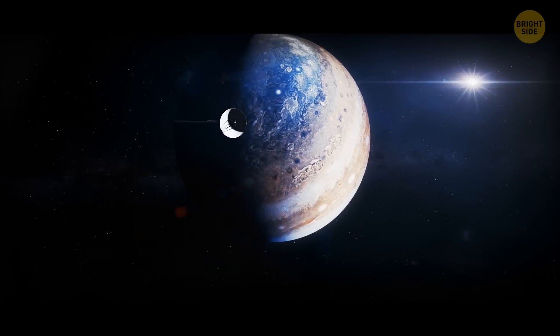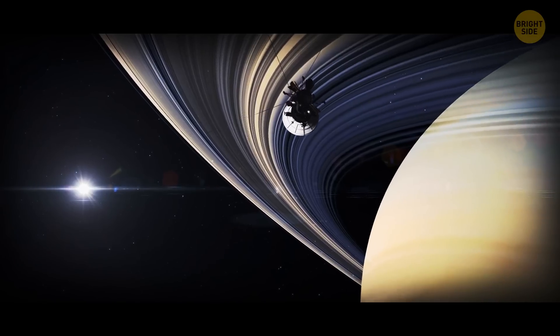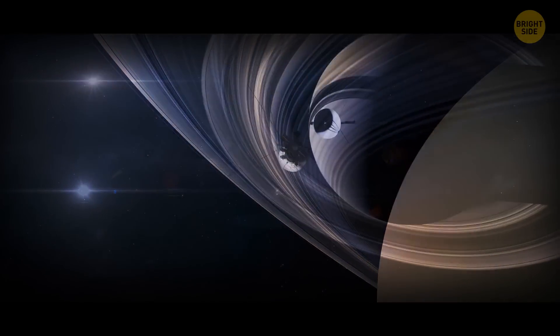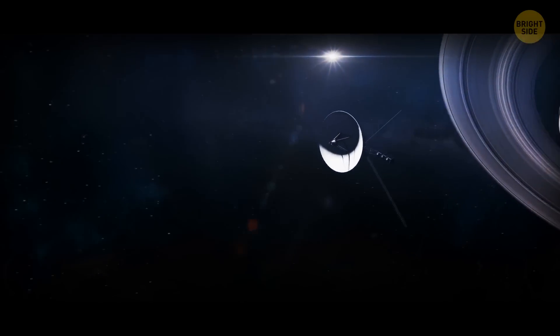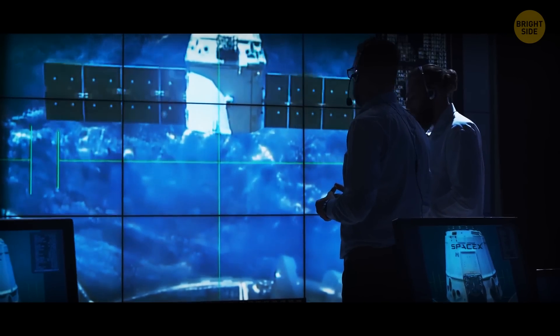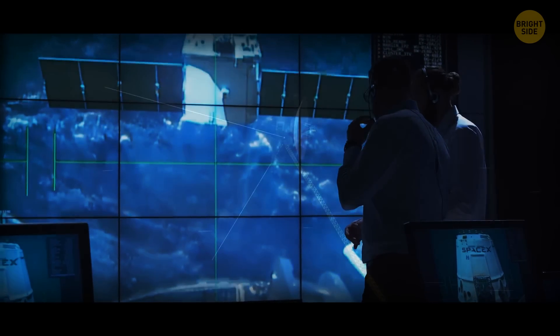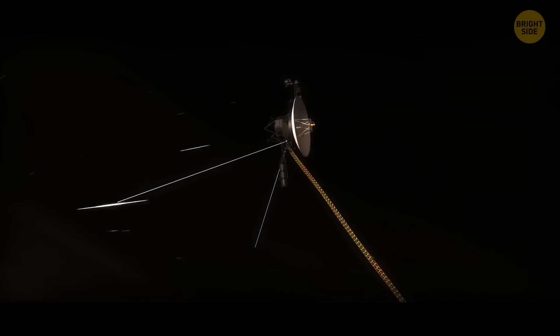Voyager 1 and 2 collected information on the planets, their moons, and their unique systems of rings and magnetic fields. These twin spacecraft continue to send data back to Earth, and Voyager 1 is currently in interstellar space.